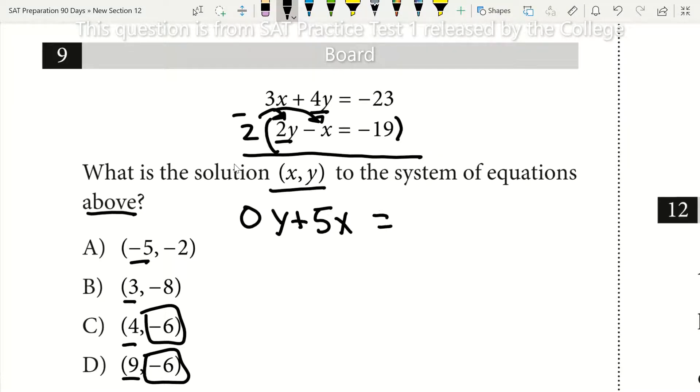And then I'll have that set equal to negative 23. So negative 23 minus 2 times negative 19. 2 times negative 19 gives me negative 38. Subtracting a negative 38 gives me plus 38, and that's going to leave me with 15.